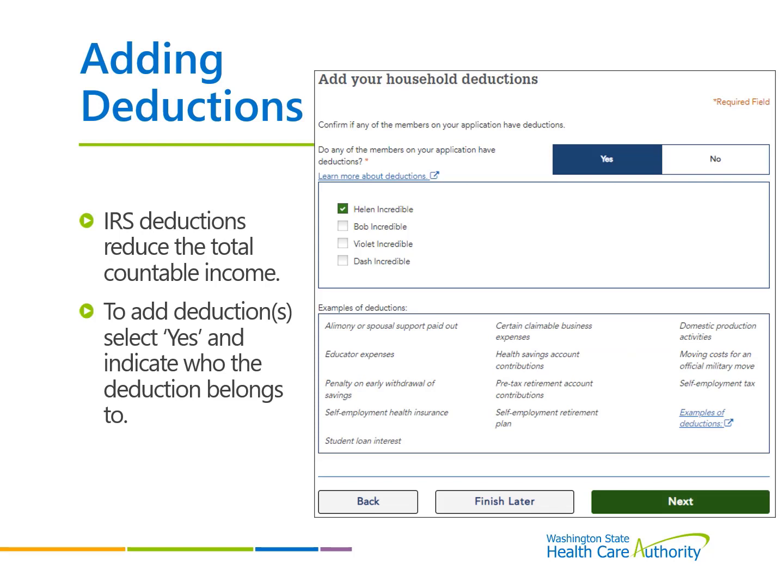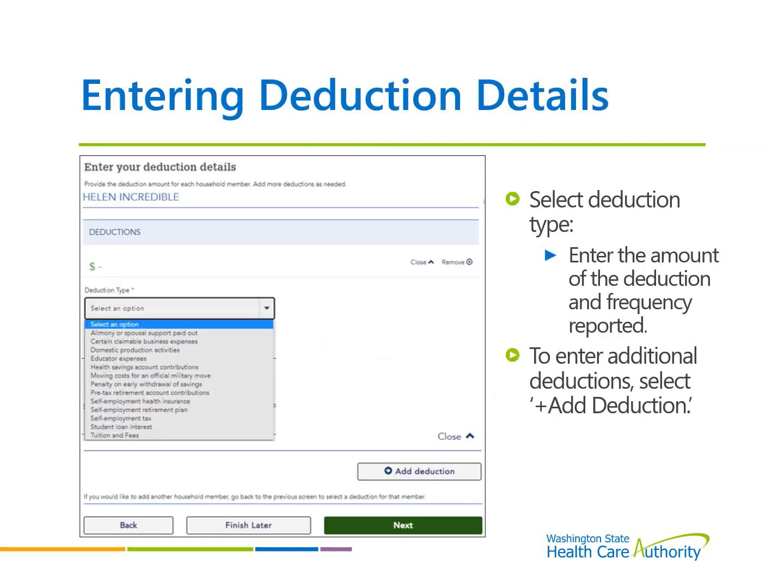If there are any household members with IRS allowable deductions, select Yes and indicate who the deductions belong to. Select Next to enter the deduction types and amounts. Select the deduction type, enter the amount and frequency received. To include multiple deduction types, select Add Deduction and enter the required information for each. When finished entering all deductions, select Next to proceed with the application.